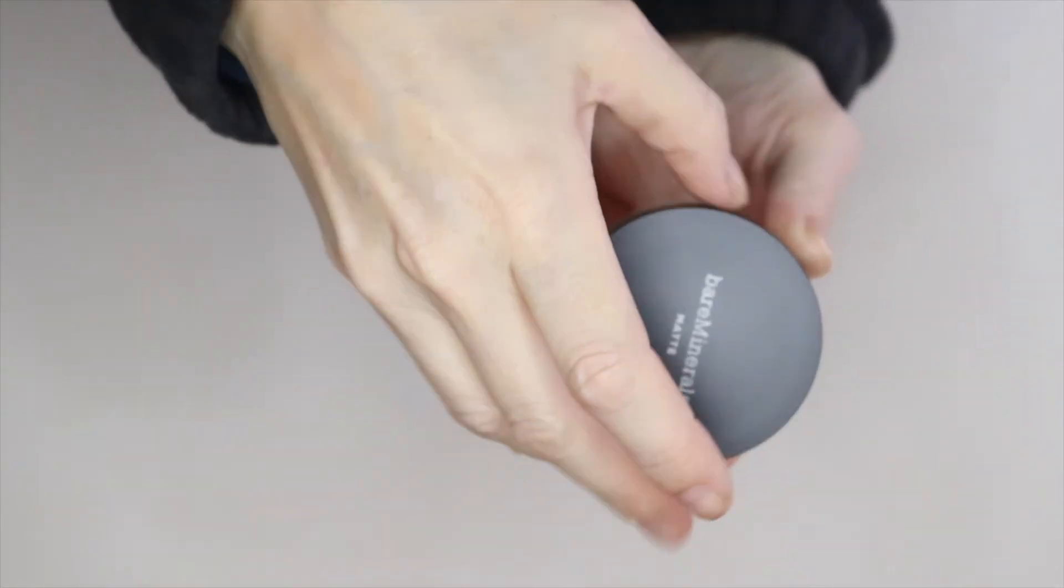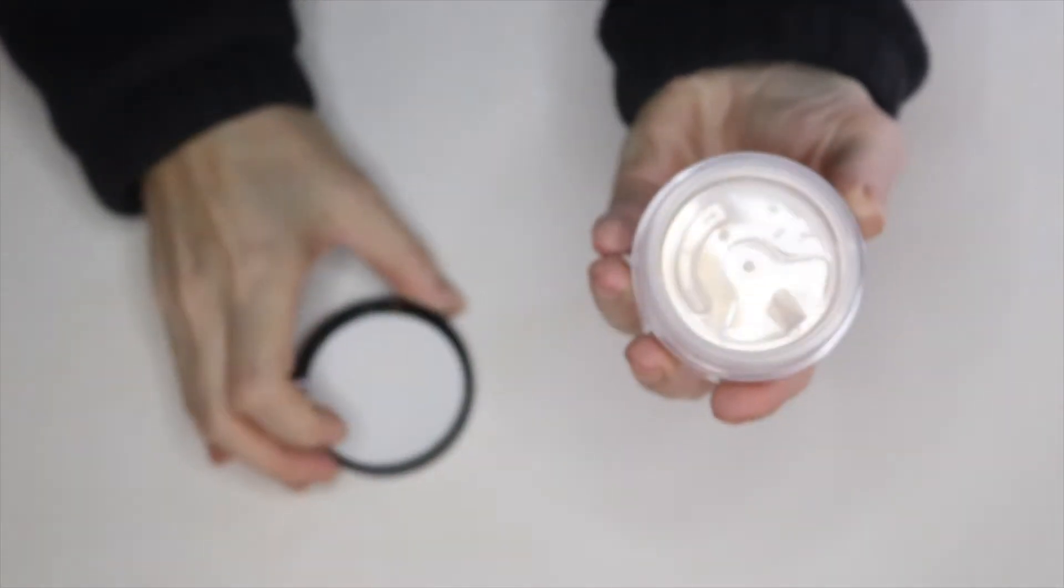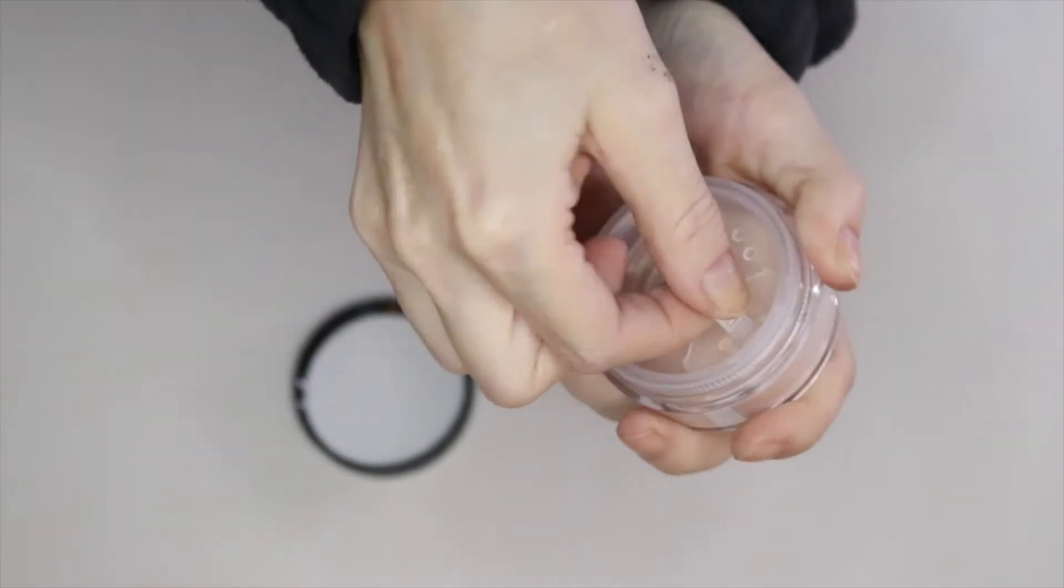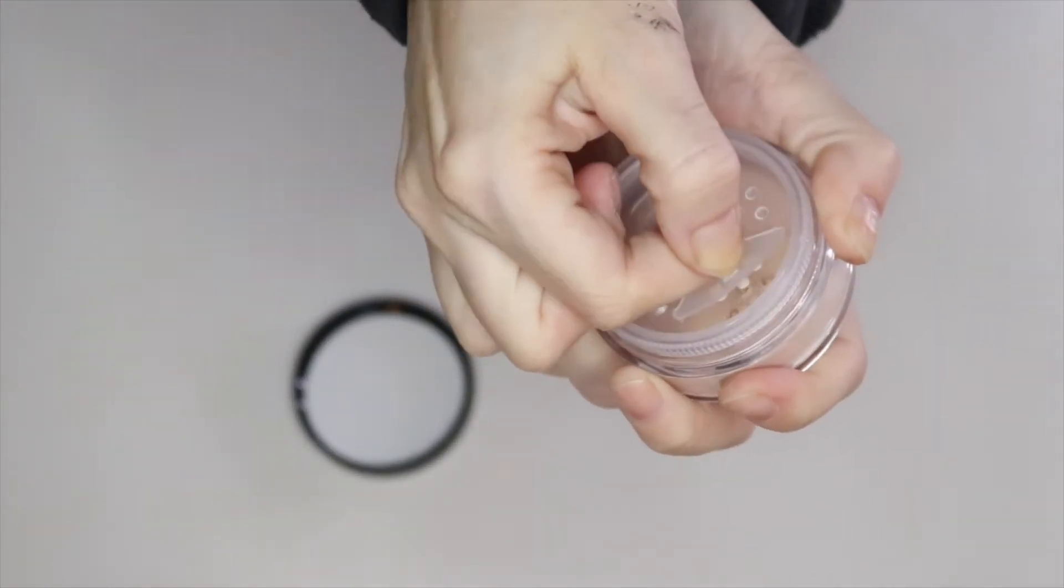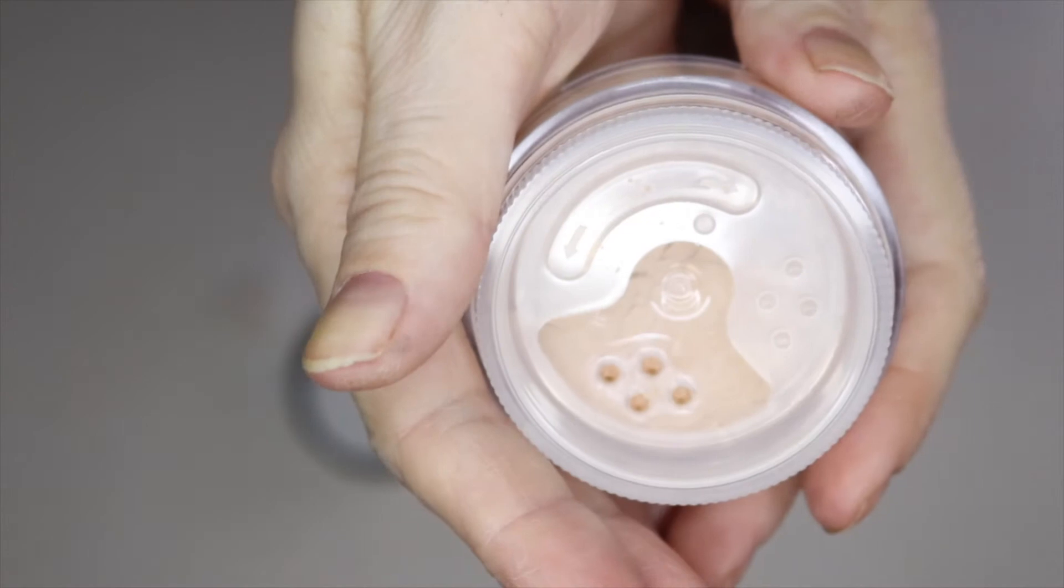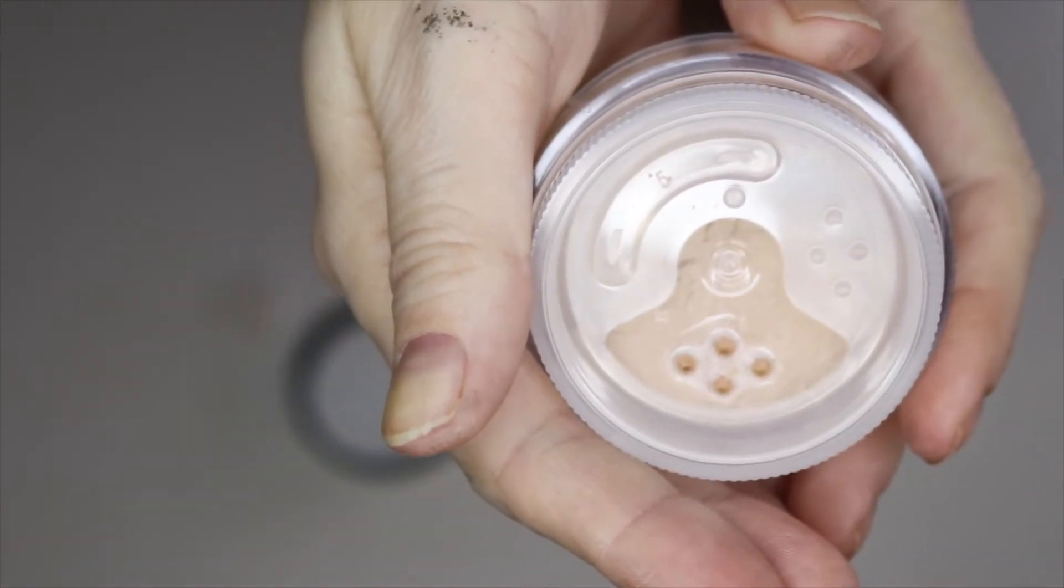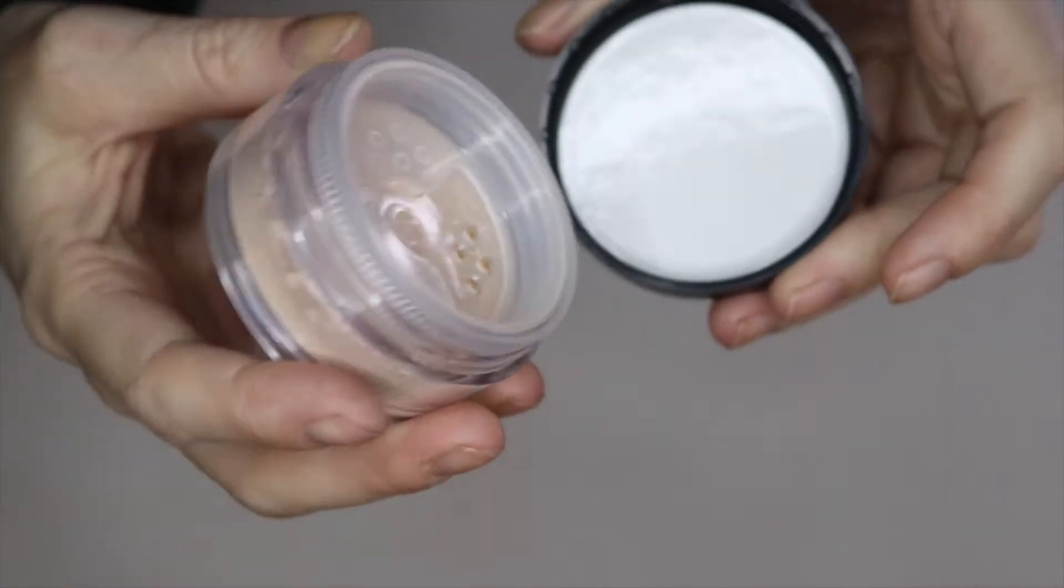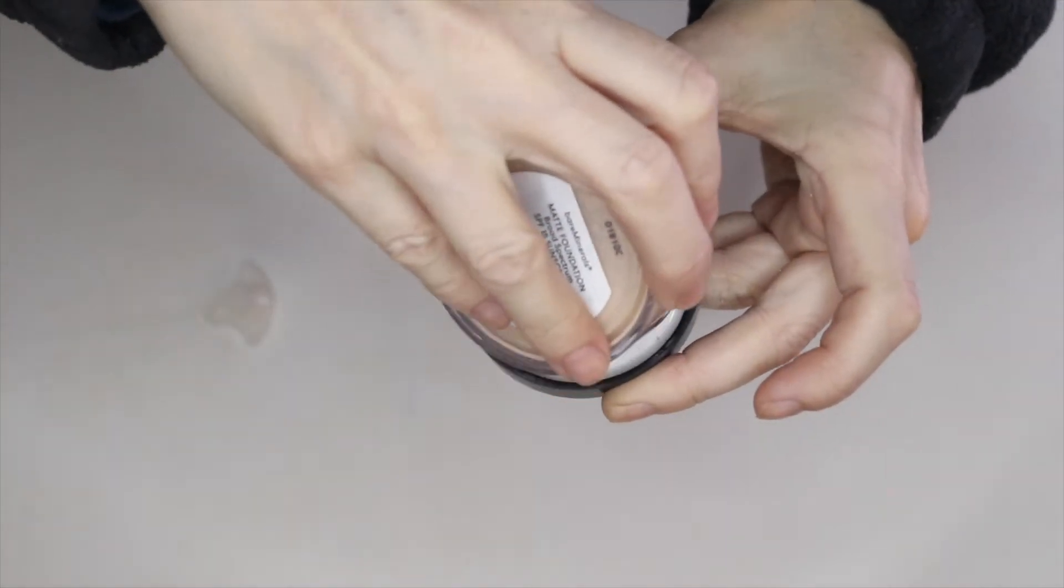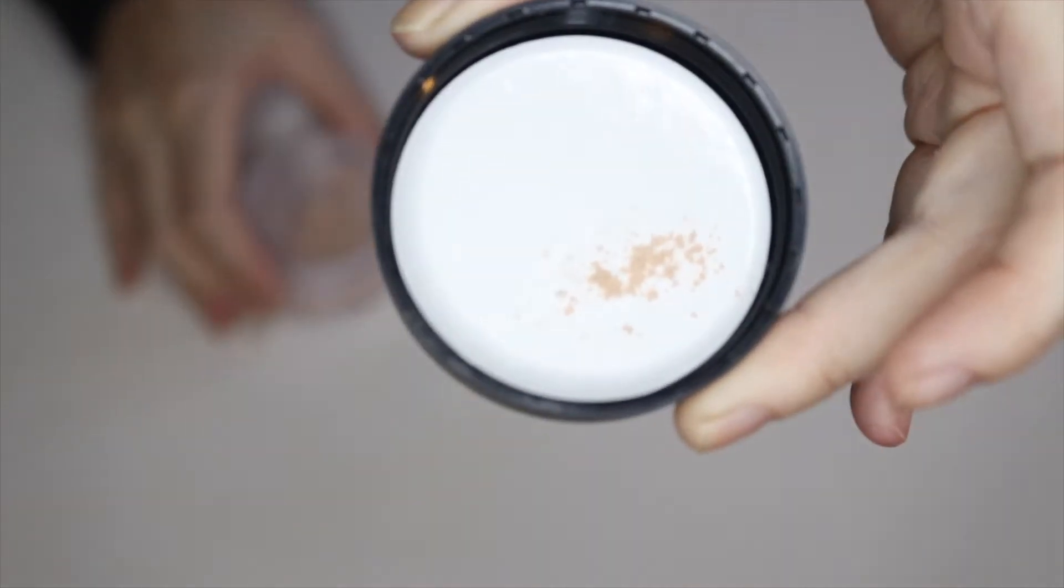Next up is the Bare Minerals Matte Foundation, and I have used this before. I absolutely love it. You use a brush to put it on, and it works to cover just as well as a liquid foundation. To use it, you just tap it into the lid. Once you have enough powder, all you do is swirl your brush around and apply that powder to your face.